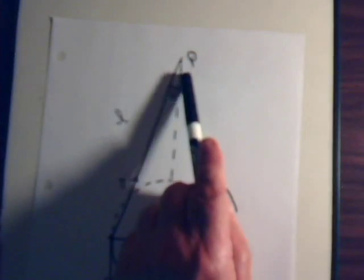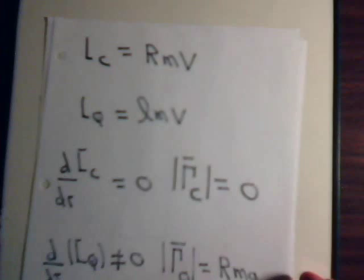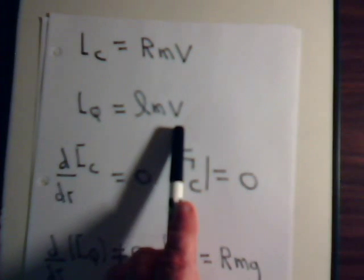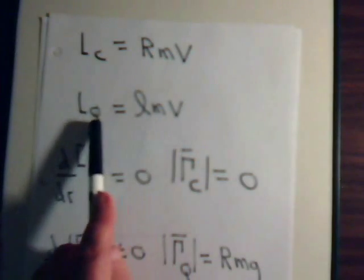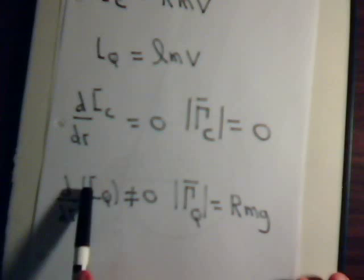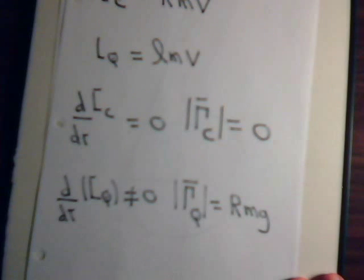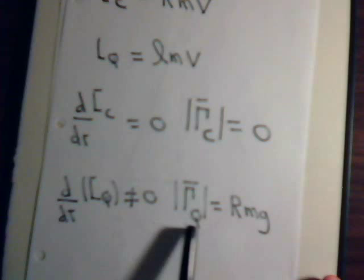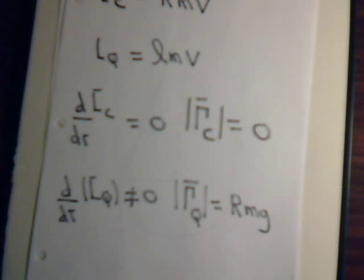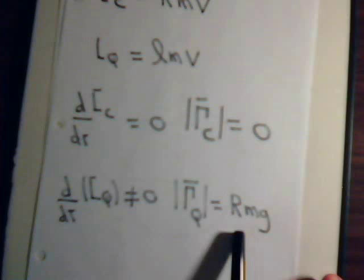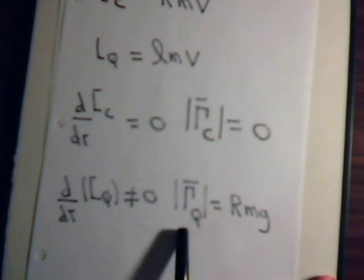Point Q is up here, not at the base, and we found that it has a constant value — lmv — but the direction always changes. So the time derivative of the angular momentum with respect to Q is not zero; it has a constant magnitude but the direction changes. That means the torque with respect to Q should not be zero, and indeed it isn't. We calculated it in the previous video — it's this non-zero value: rmg.